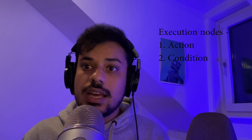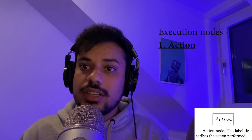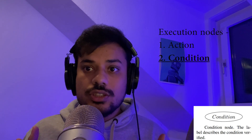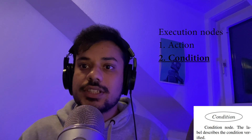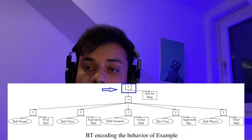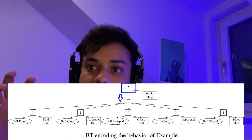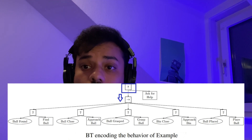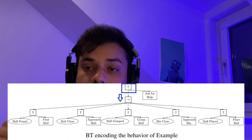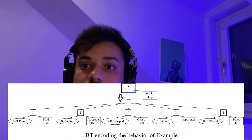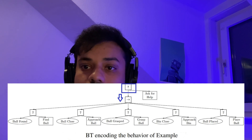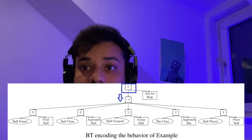There are two simple types of execution nodes: action and condition. An action node carries out an action and returns success, failure, or running. A condition node checks for a condition and returns success or failure. Looking at the behavior tree for our robot example, the root node is a fallback node — it goes to the left side (main tree) first, and the right side (ask for help) is only used if the left side fails. If the left side returns running or success, the right child is not used at all.